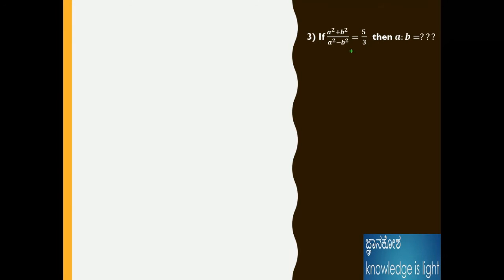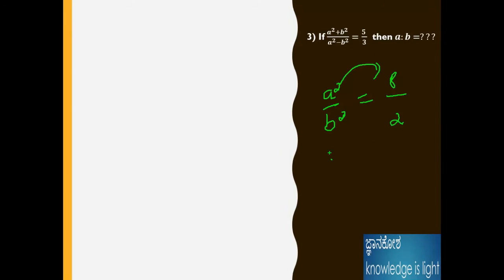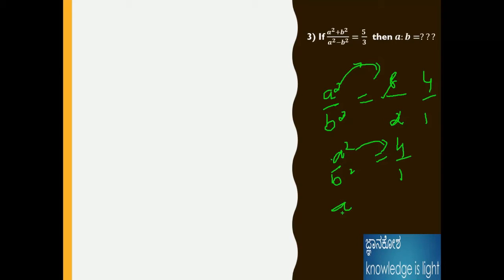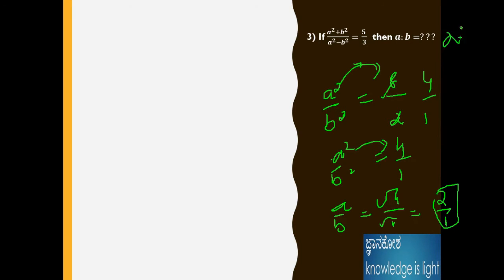Next problem: (A²+B²) divided by (A²-B²). I directly write A²/B² = (5+3)/(5-3) = 8/2 = 4/1. Shifting the square to the left side, A/B = √4 / √1 = 2/1. Therefore the answer is 2:1.